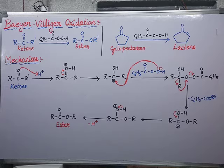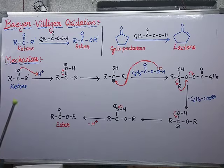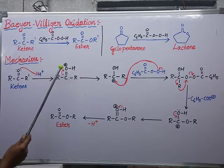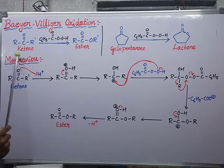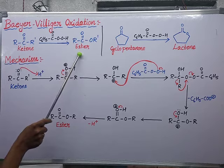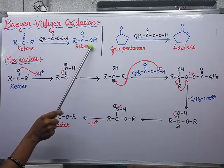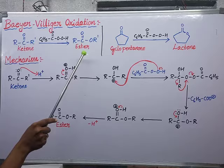Acyclic ketones or cyclic ketones, on reacting with peroxybenzoic acid (peracid), convert to esters or lactones. You can observe here the ketone is converting into an ester. There is an introduction of oxygen taking place, so it is an oxidation process.